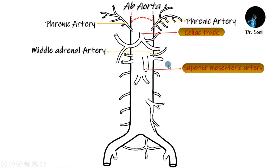The medial suprarenal or medial adrenal artery, starting from L1, crosses the crus of the diaphragm laterally on each side and supplies the suprarenal gland.